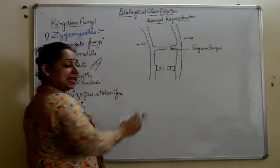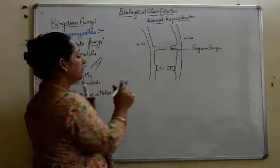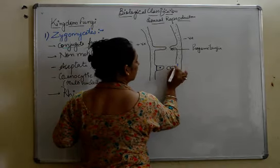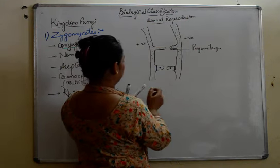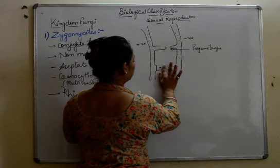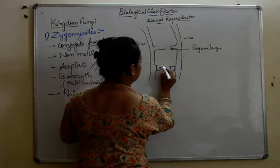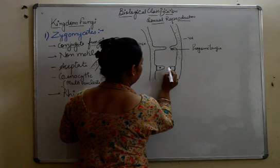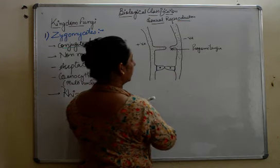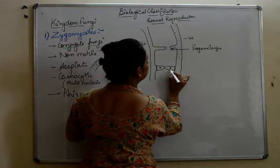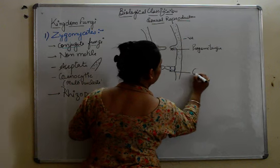At this stage, when the septa are formed, we can join the two structures together. At this point, the structure is known as gametangia.